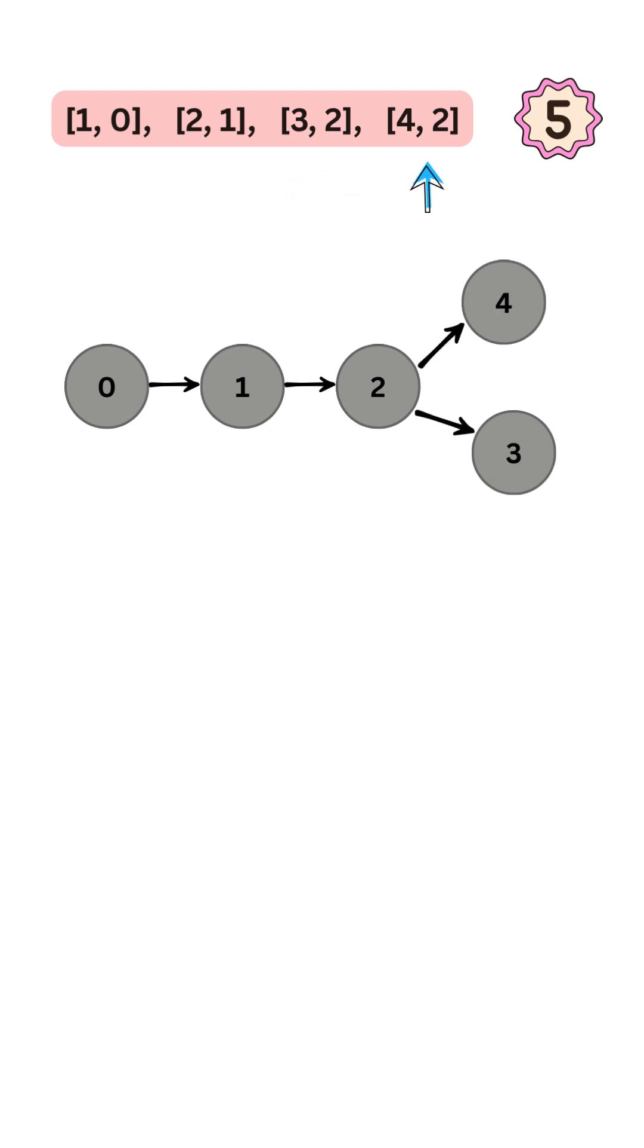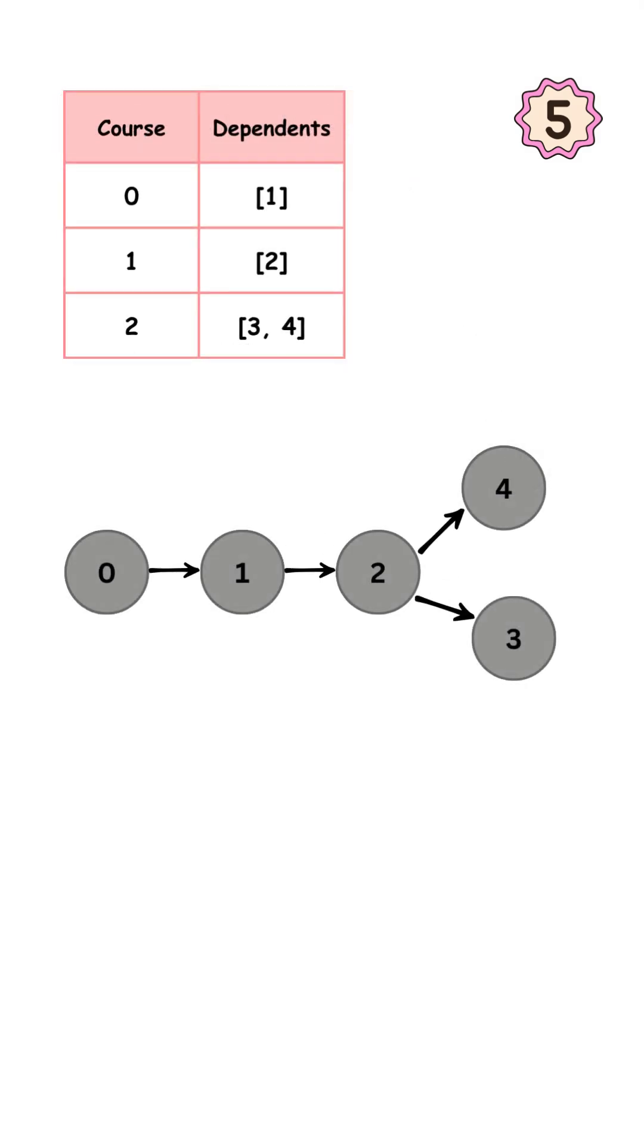To represent this graph in code, we'll build an adjacency list, a dictionary where each course maps to a list of courses that depend on it. We will use the depth-first search algorithm to process each node of the graph and figure out if there's a cycle or not.